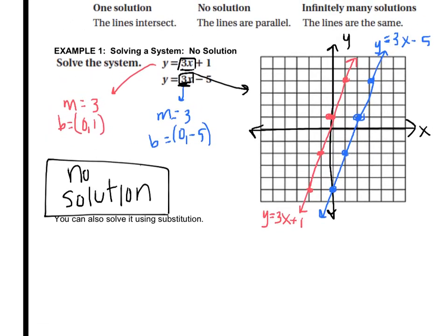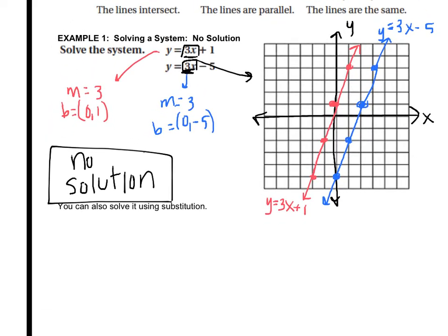We can also solve it by substitution. So here's what it looks like when you solve it by substitution and there's no solution. Remember, substitution says that you cross out the y equals part, and you just take the two equations and set them equal to each other.